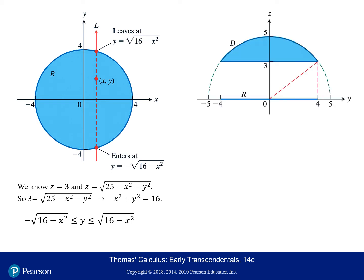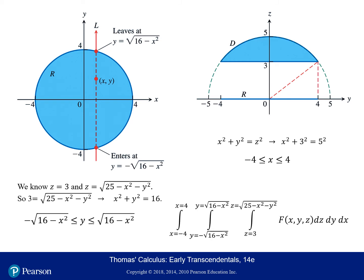For the limits of integration in terms of X, we look at the view of our region staring down the X axis — looking at the YZ plane. Forming a right triangle and using the Pythagorean theorem, with the sphere radius of 5 and the height of 3, we get that X is bounded between negative 4 and 4. This matches our circle of radius 4. So the triple integral integrates with respect to Z first with its lower and upper boundaries, then Y with its lower and upper limits, and lastly X with constant limits negative 4 to 4.